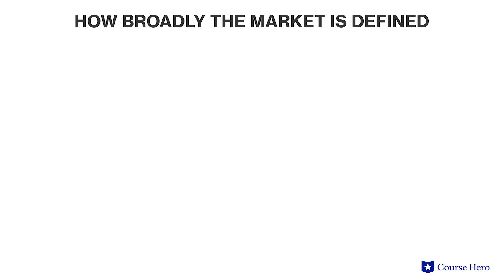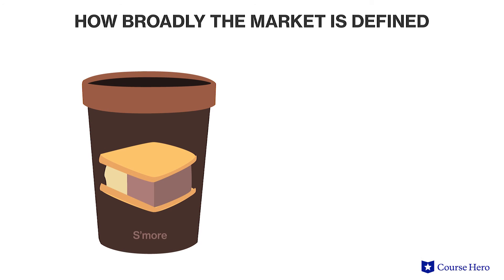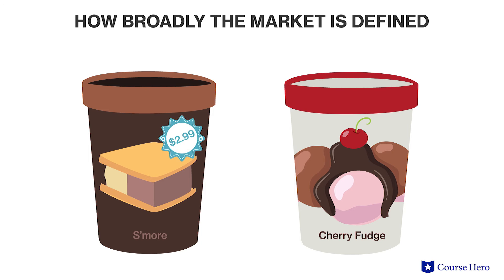The fourth determinant of price elasticity of demand is how broadly the market is defined. The broader the definition of the market, the less elastic demand will be because there are fewer substitutes. For example, the demand for ice cream in general is less elastic than the demand for a particular brand of ice cream, because consumers will respond more to a change in the price of a specific brand than to an overall change in the price of ice cream.